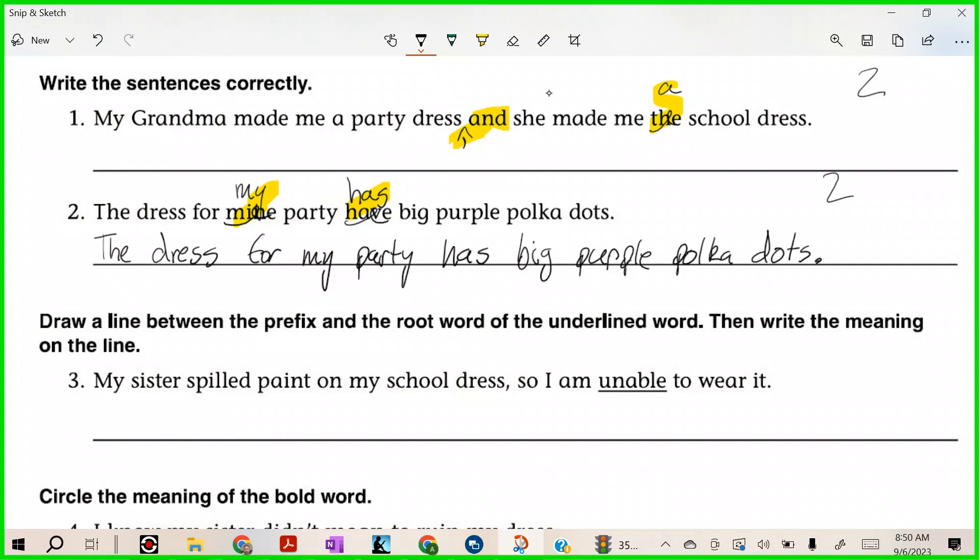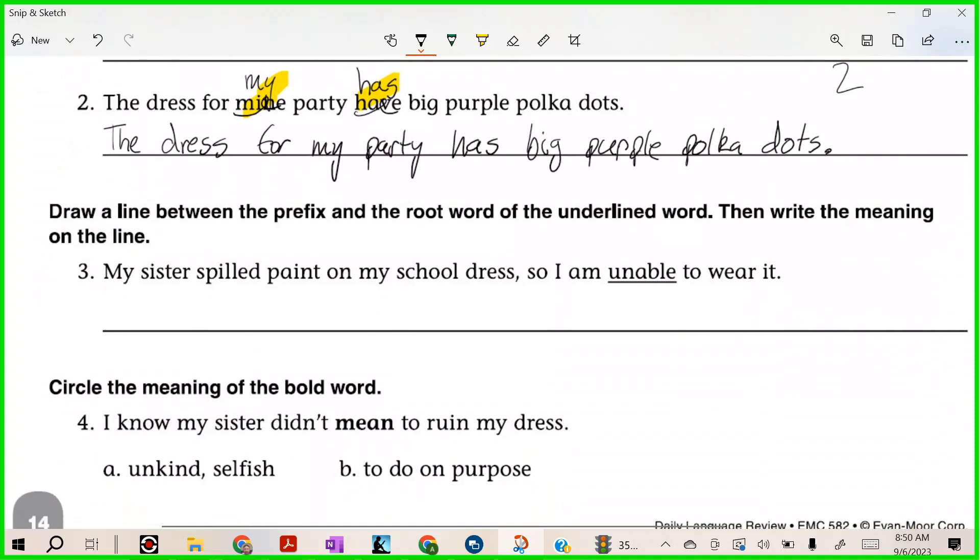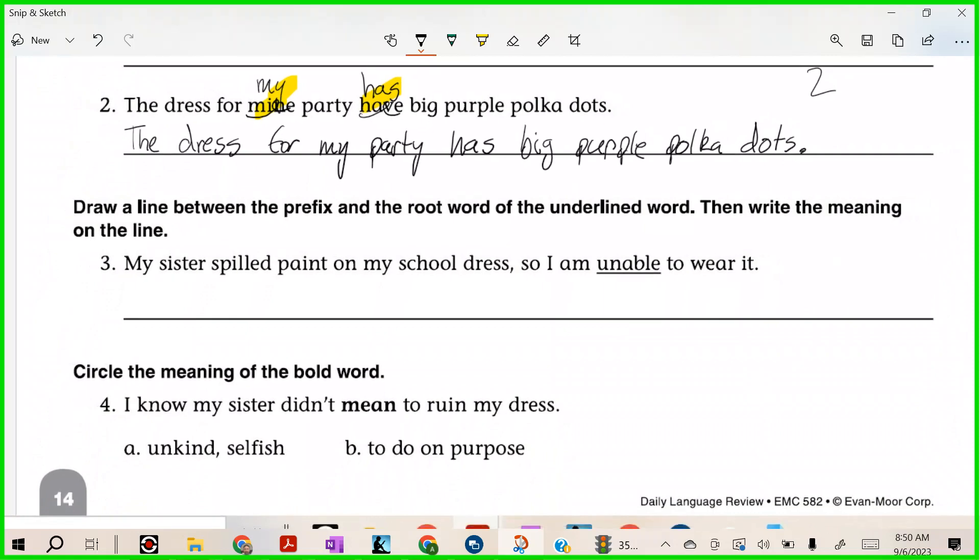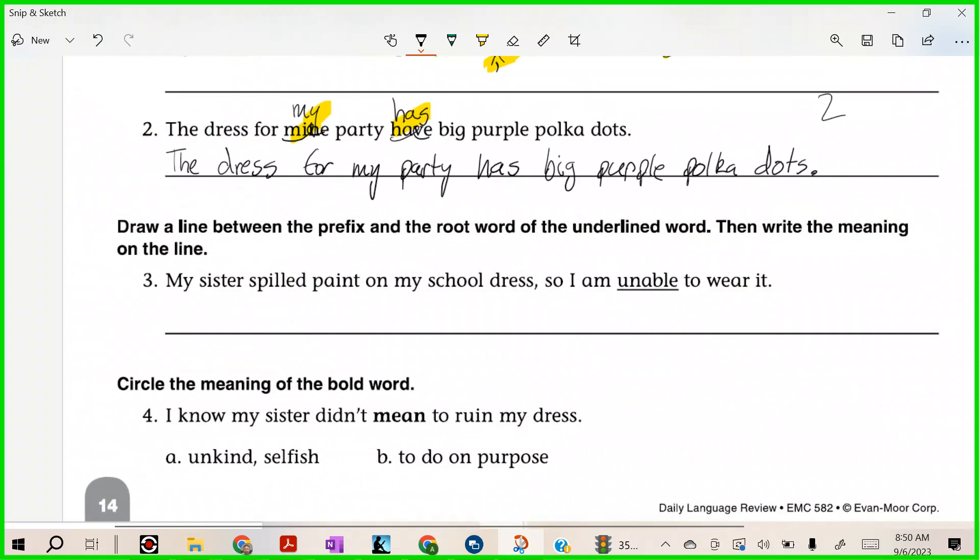Alright, read, edit, write. So let's draw a line between the prefix and the root word of the underlined word, then write the meaning on the line. Alright, here's the root word, ready? 'Unable.'